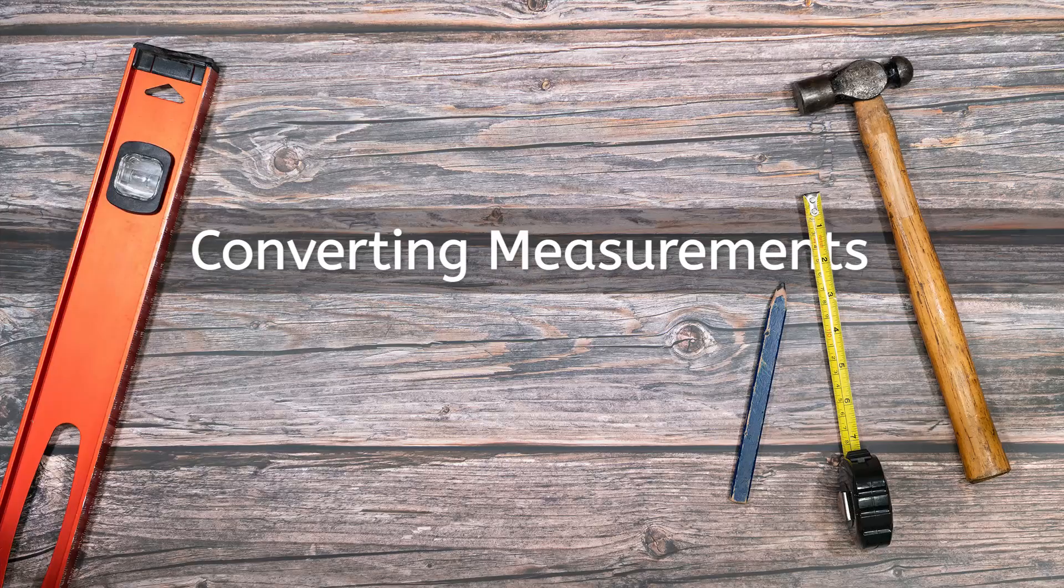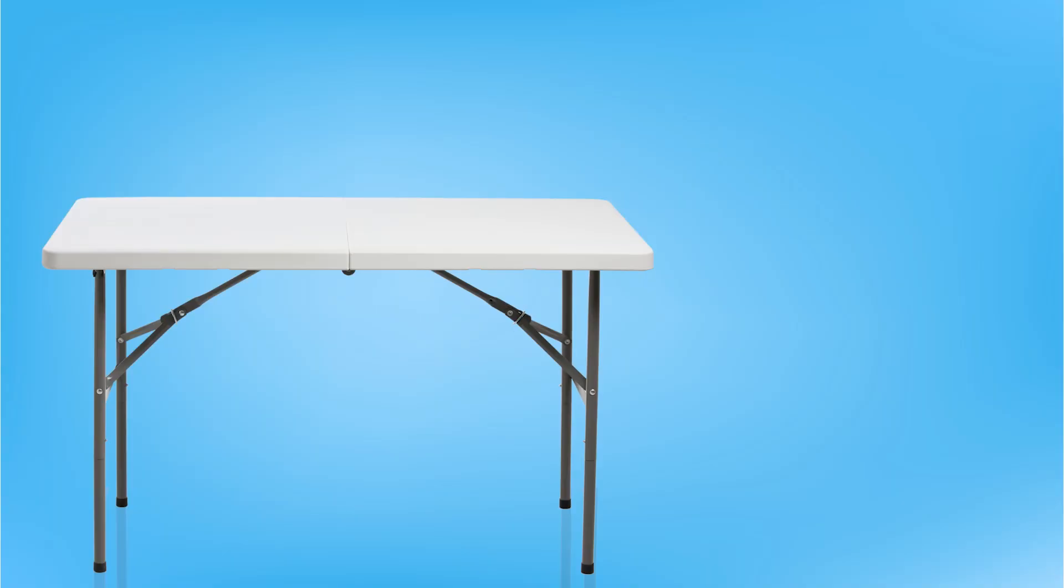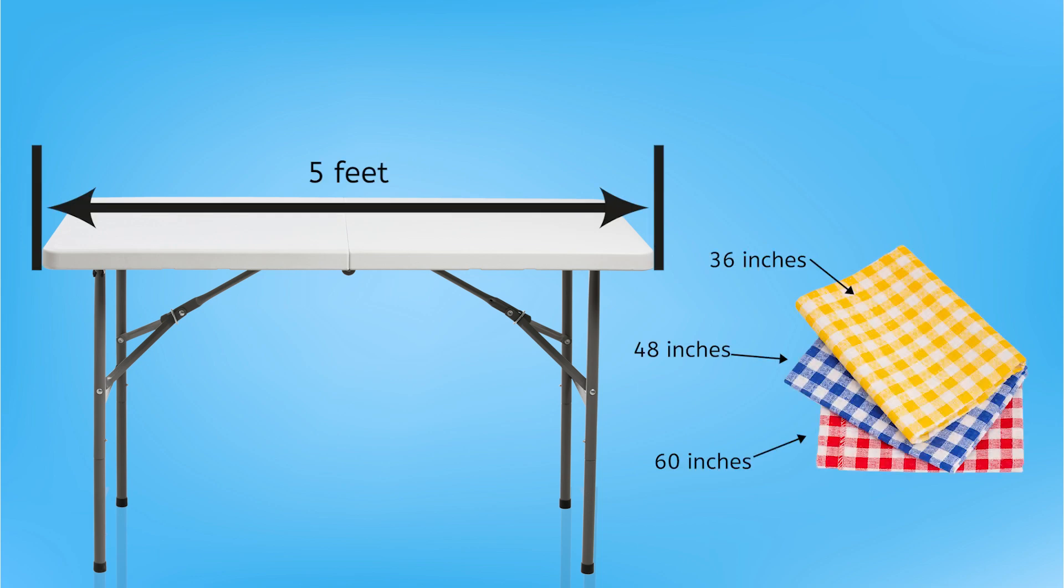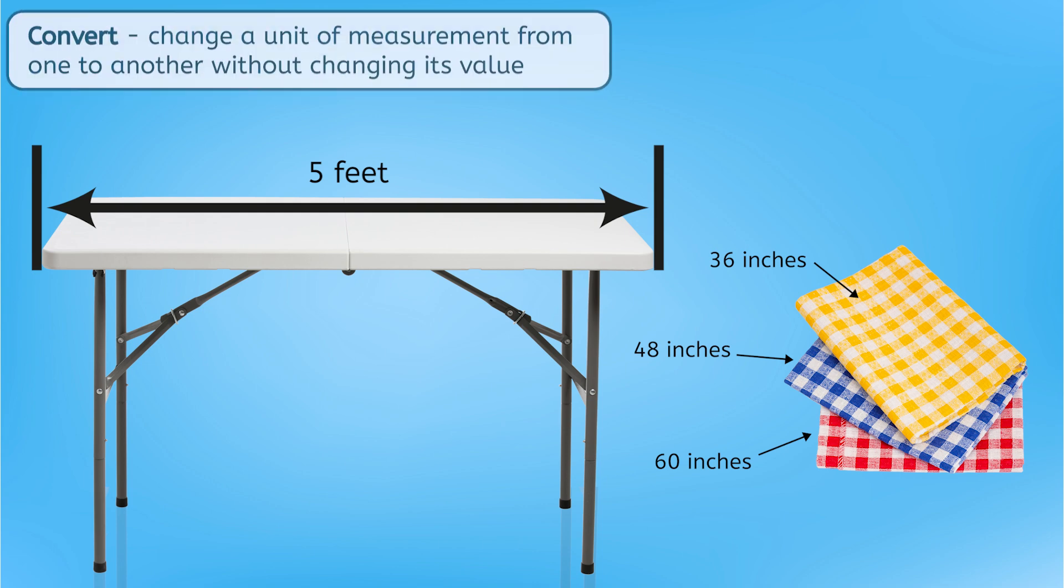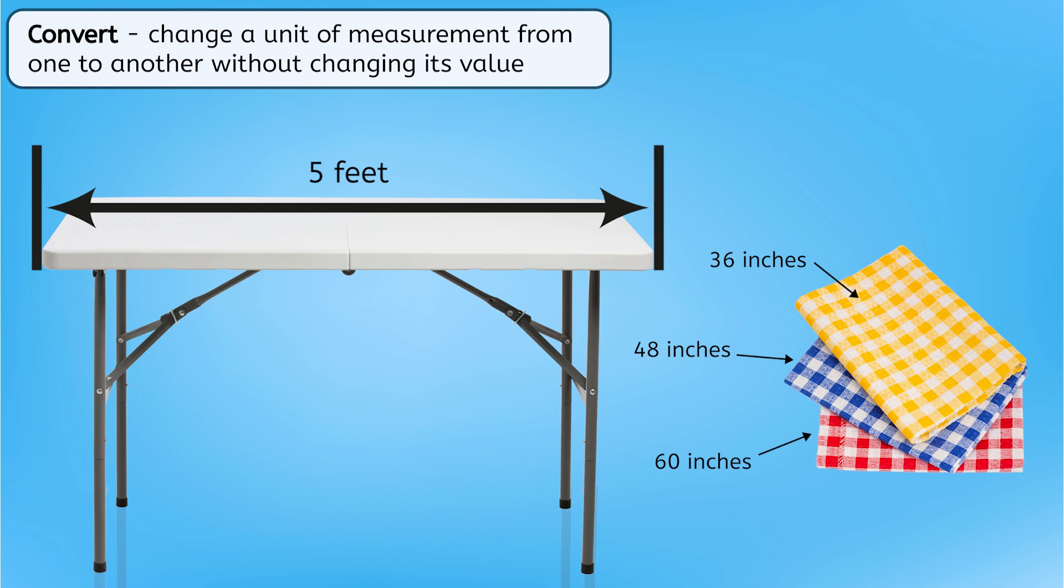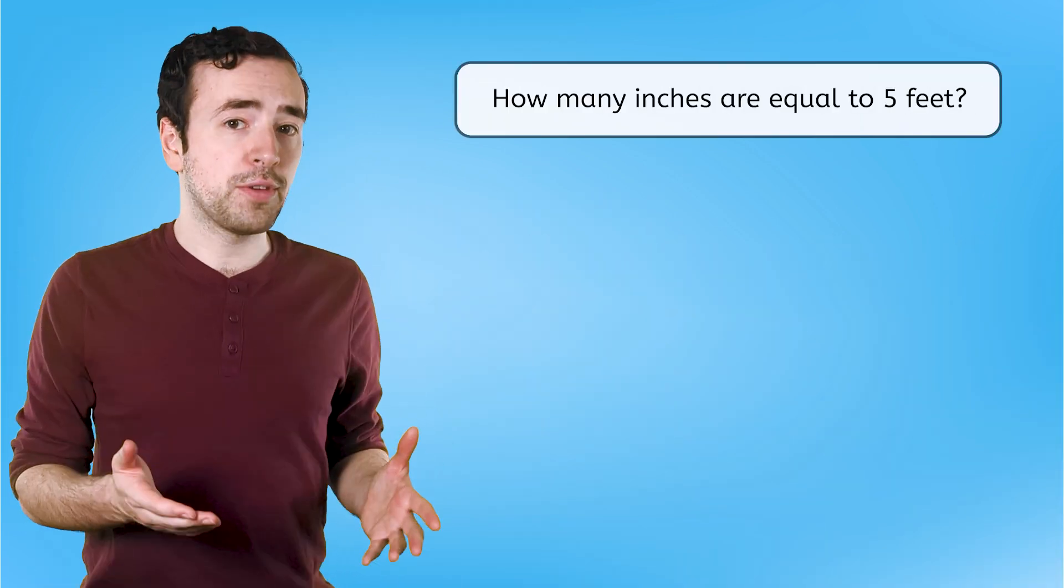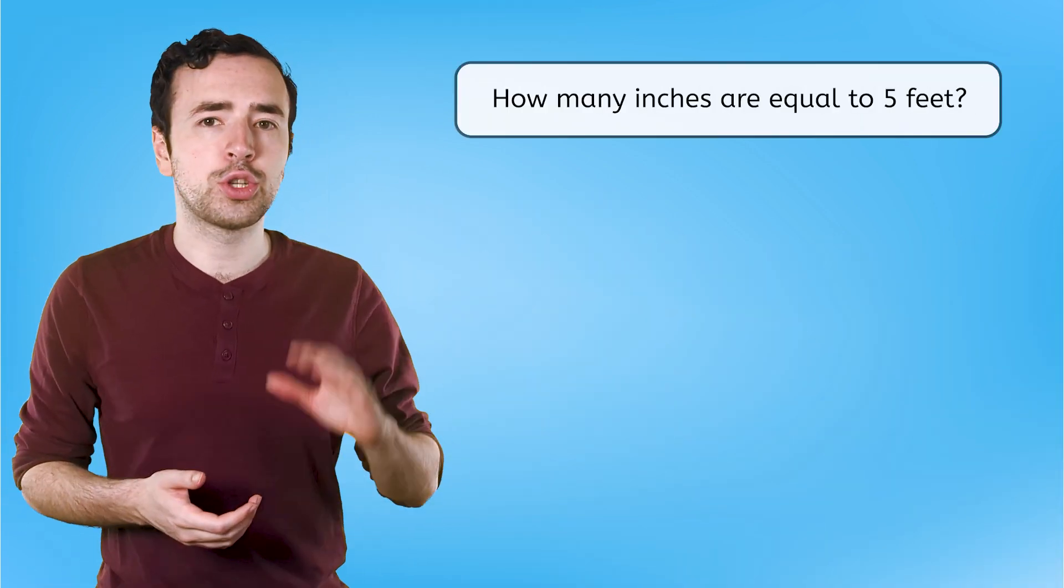While Mia finishes putting the display shelf together, let's check out what else we need to do to prepare for the bake sale. We need to buy a table cover for our checkout table. The table is 5 feet long, but all the table covers are listed in inches. How will we know which one to buy? We need to convert or change our units of measurement. Converting a unit of measurement from one to another doesn't change its value. It's just like regrouping. So how can we figure out how many inches are equal to 5 feet?